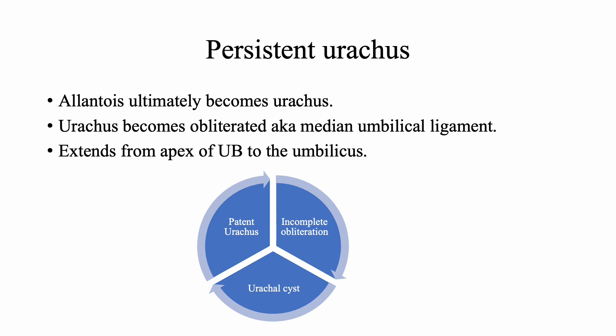The next congenital anomaly of the urinary bladder is persistent urachus. To understand this, we first need to recall the allantois — a structure that connects the umbilicus to the apex of the urinary bladder during fetal life. This allantois ultimately becomes the urachus, which becomes obliterated and is also known as the median umbilical ligament. It extends from the apex of the urinary bladder to the umbilicus.